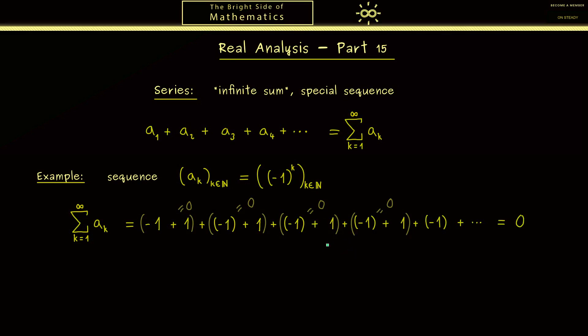Ok at this point you should ask why do we set the parentheses in this way. Of course there are also other possible ways. For example we could skip the first element minus 1 and set the parentheses here. Then we still add zeros but what remains is minus 1. Ok now we have two different possible results.